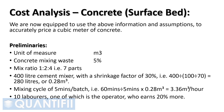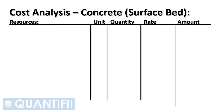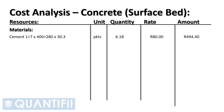10 laborers, one of which is the operator who earns 20% more. Using the layout for a cost analysis with columns for resources, unit of measure, quantity, rate and amount, we can now calculate the cost of a cubic meter of concrete. Cement: 1 part divided by 7 parts, multiplied by 400 liters divided by 280 liters, multiplied by 30.3 pockets per cubic meter, multiplied by 80 Rand per pocket of cement, equals 494 Rand and 40 cents.